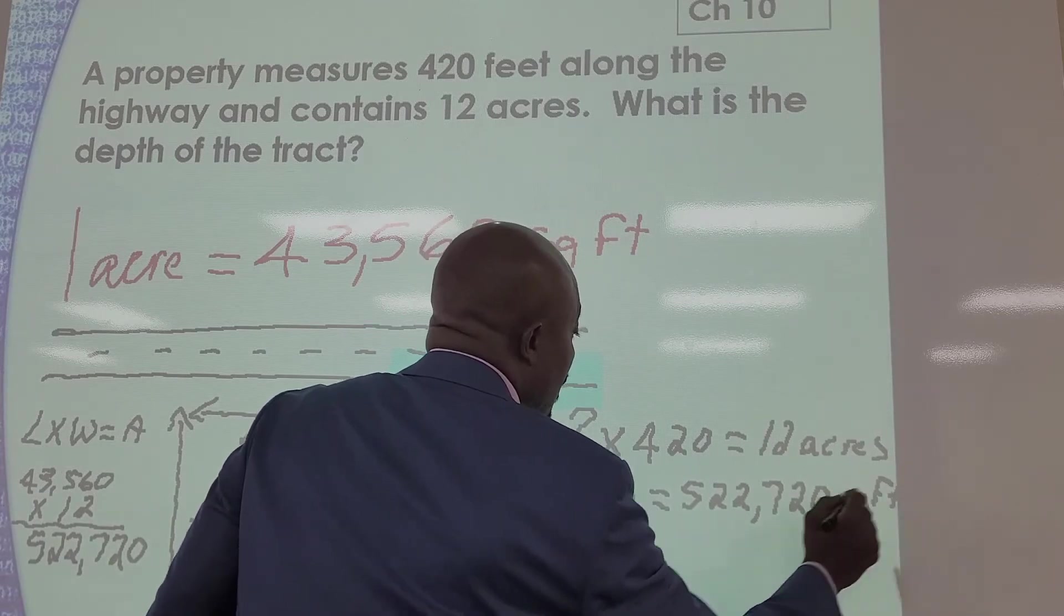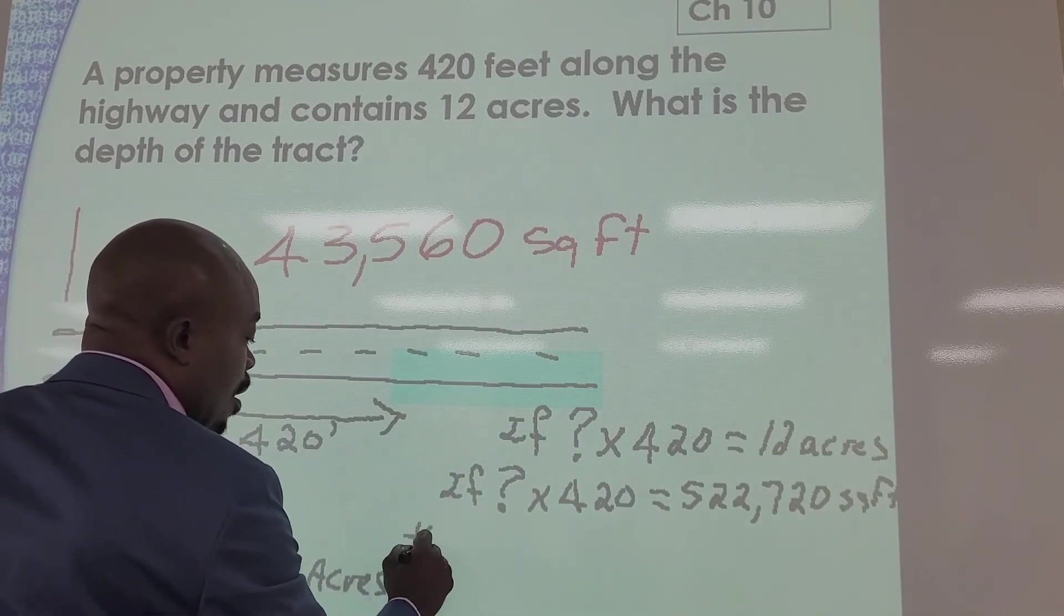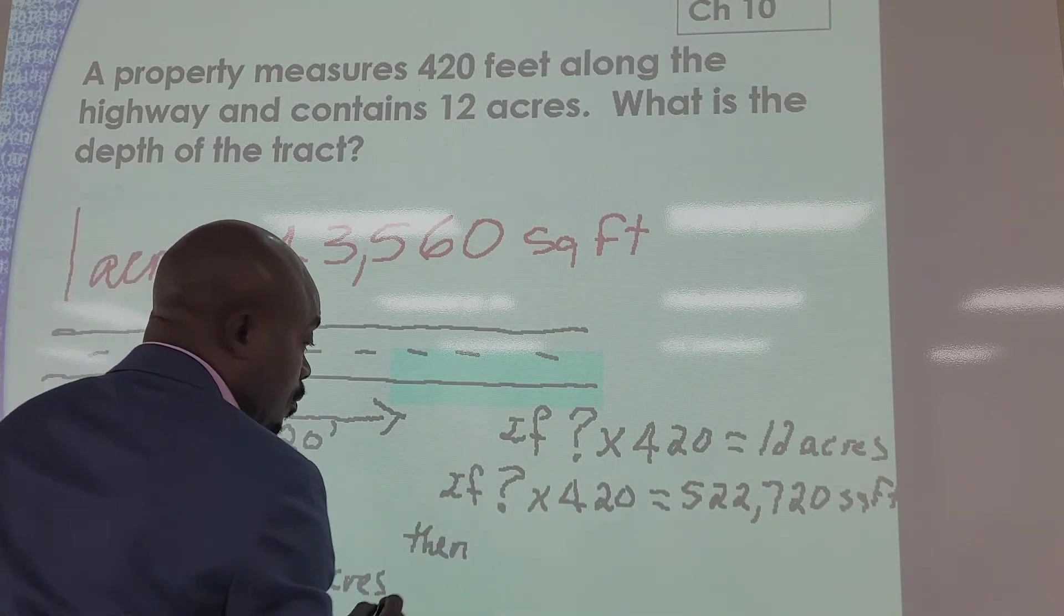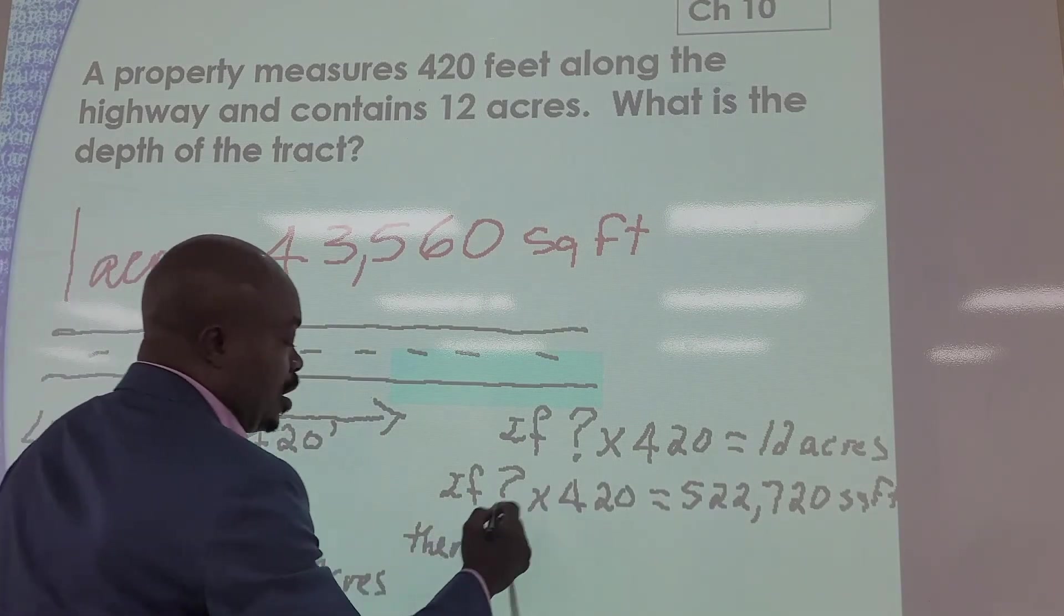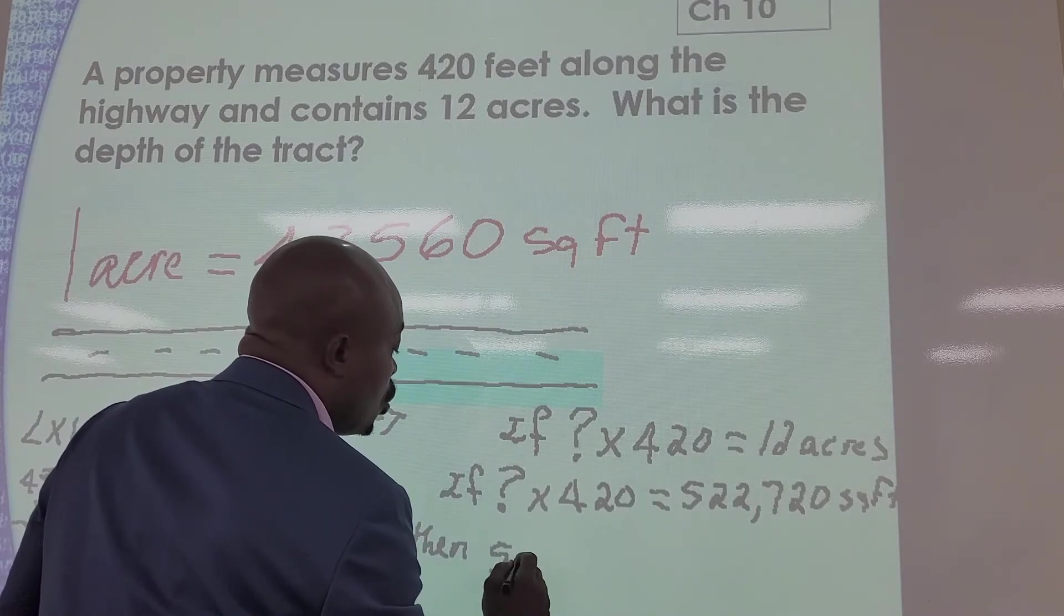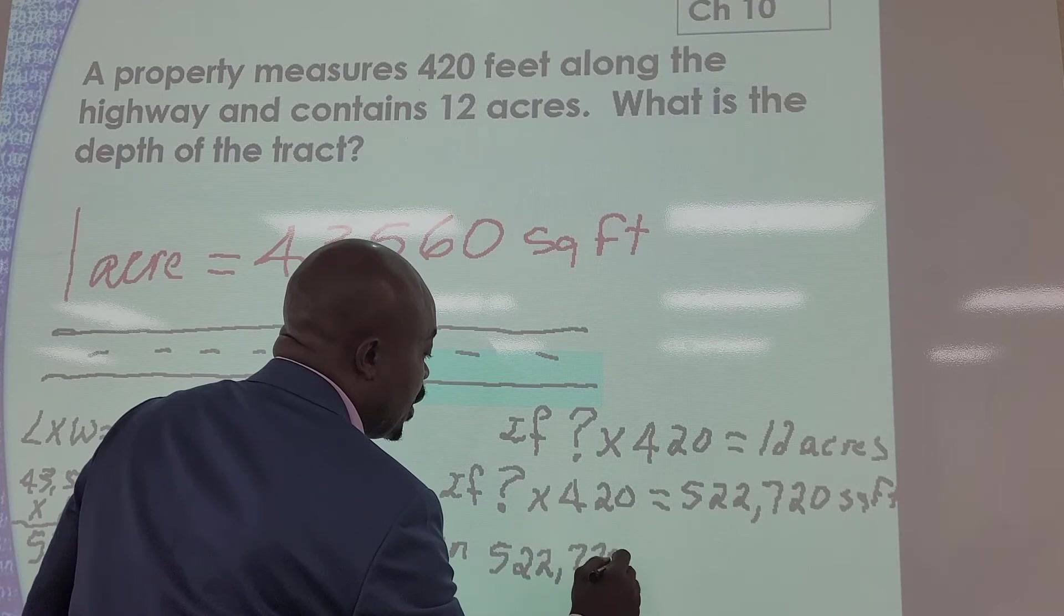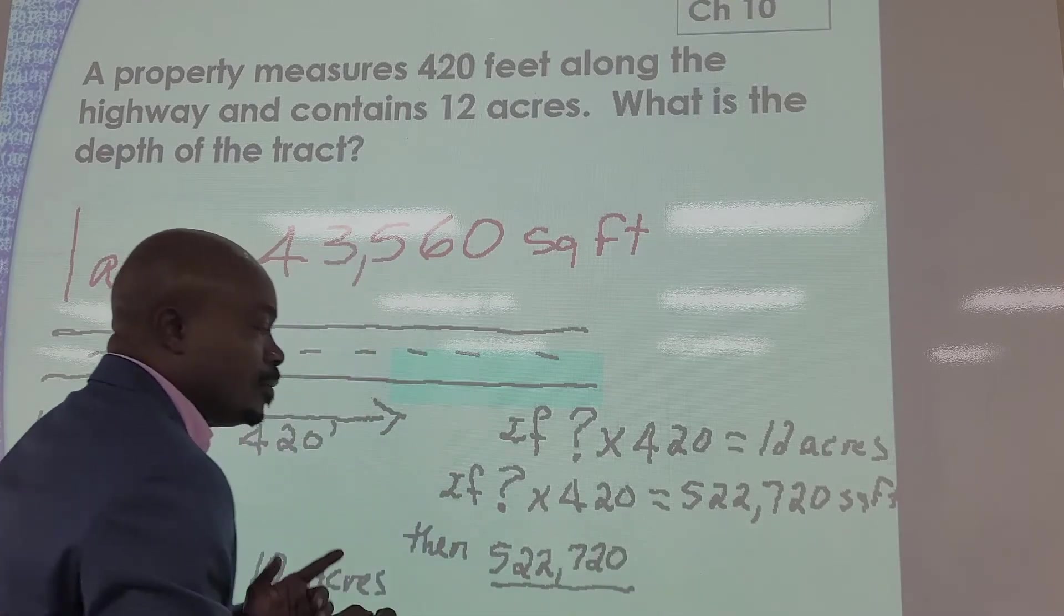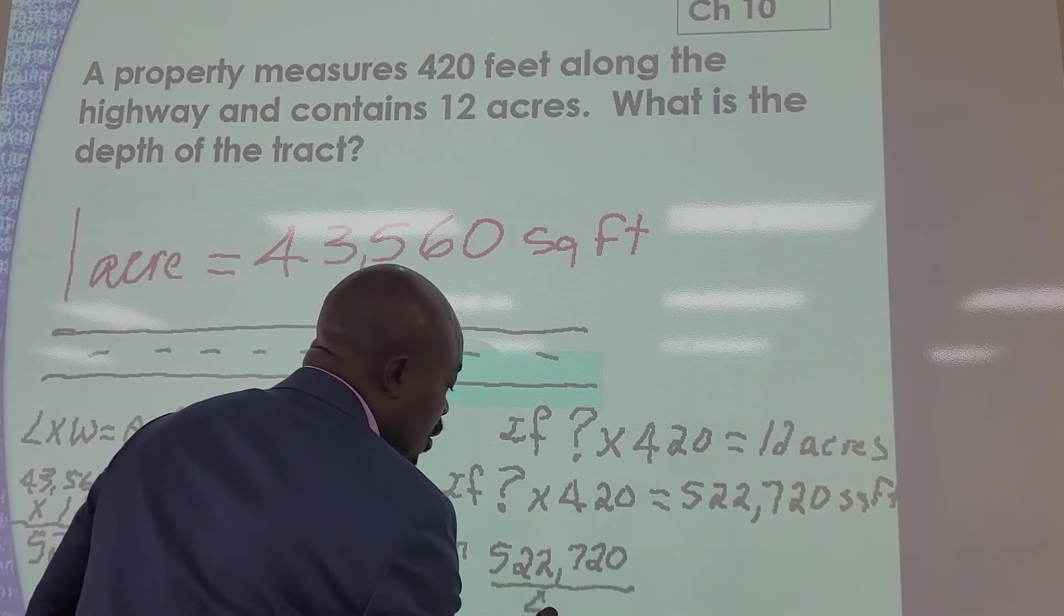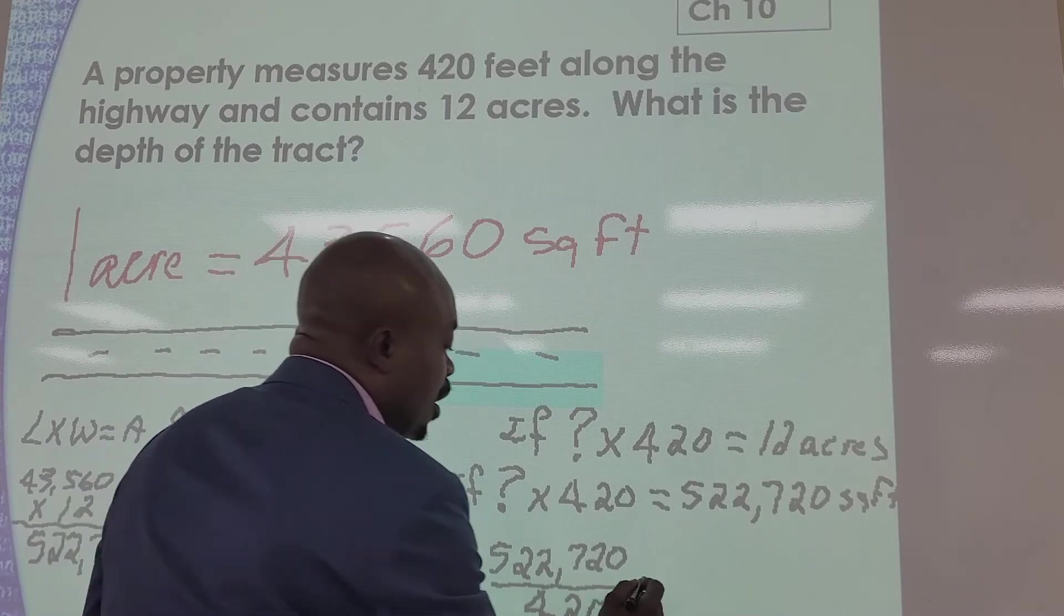Then what are we going to do? We're going to take 522,720 divided by what? 420.